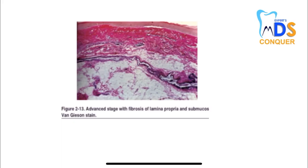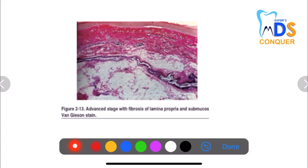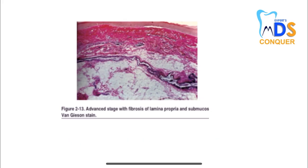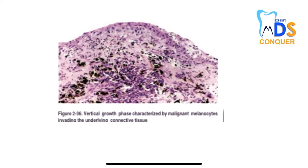Let us start with the first one. This is a potentially malignant disease where the advanced stage has shown fibrosis of the lamina propria as well as the submucosa. Where do we see this fibrosis in a potentially malignant disease? It is quite obvious — it is oral submucosal fibrosis. There is fibrosis of the lamina propria and submucosa.